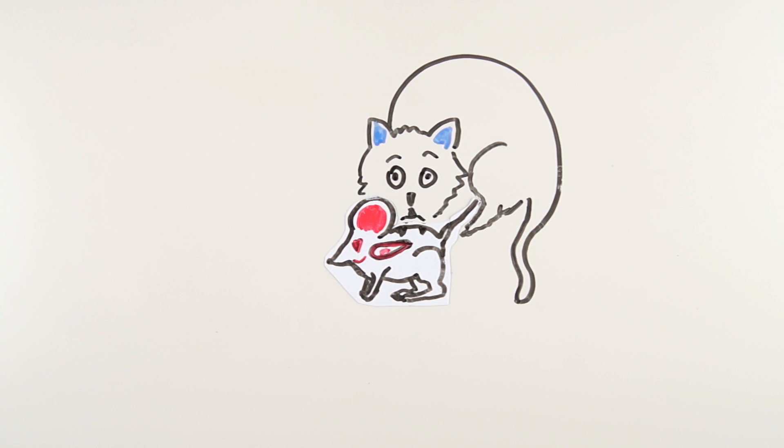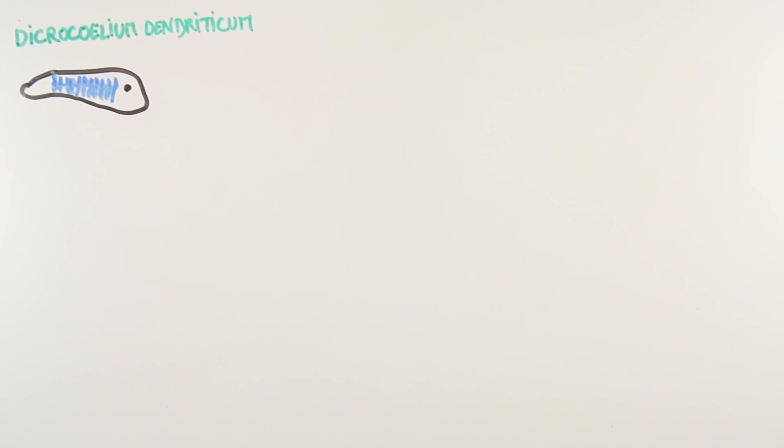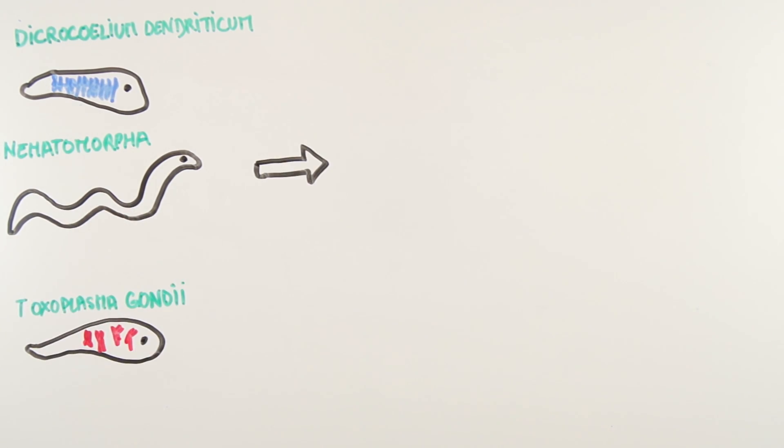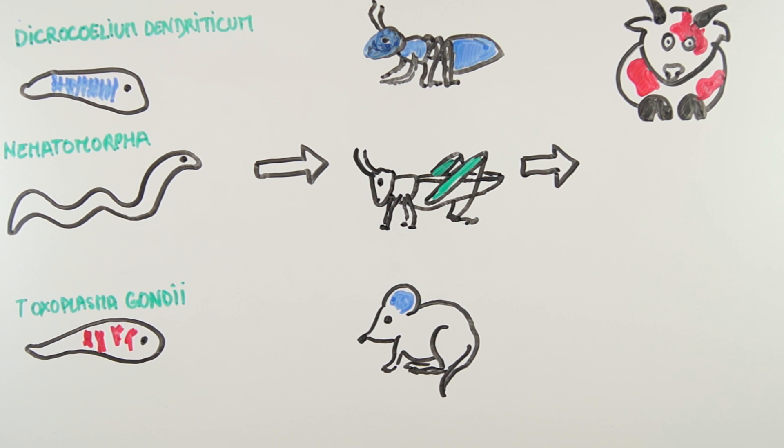All those animals are called parasites because they can develop and reproduce at the expense of other organisms. Throughout evolution, those parasites have developed strategies allowing them to use other intermediate species and modify their behavior to spread and join the species or medium in which they can reproduce.